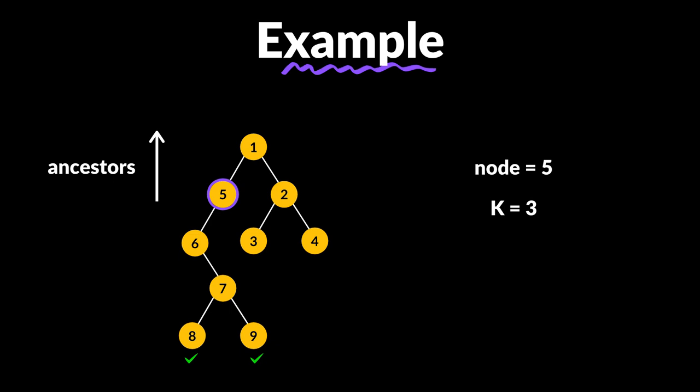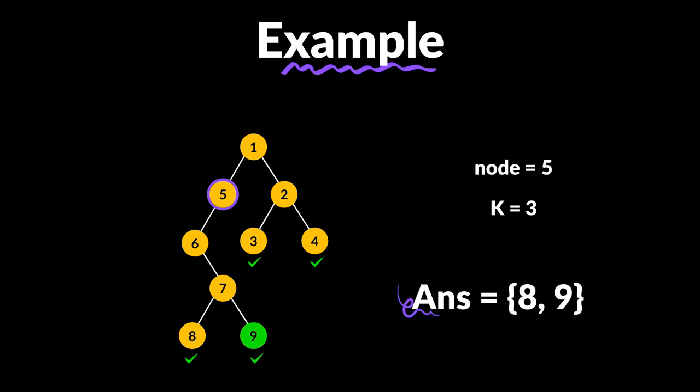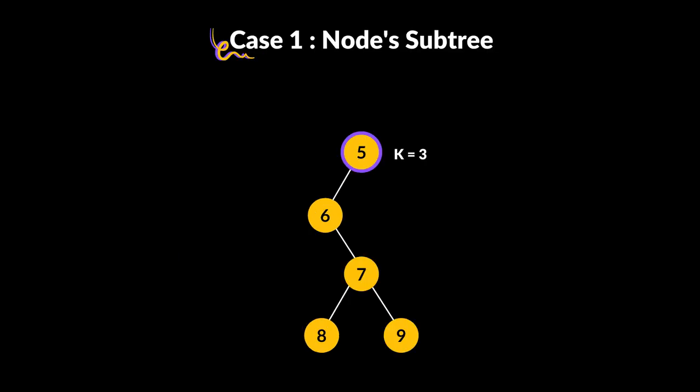Now considering the ancestors of node 5, if we go distance 1, 2, 3, we reach nodes 3 and 4. So our final answer includes nodes 8, 9, 3, and 4 — these are all nodes at distance K from the target node 5.